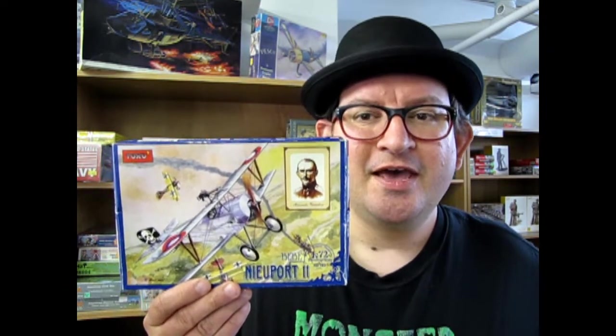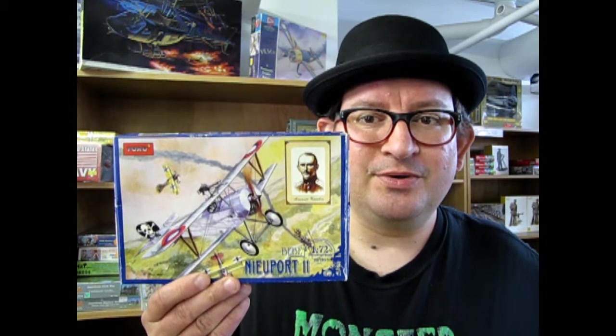Hello everybody, my name is Trevor Rusleskew and welcome to another episode of Monster Hobbies What's in the Box. And tonight we're going to look at this interesting model from Toko.